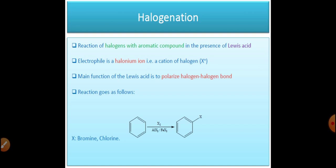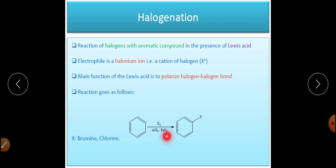The electrophile is generated by a Lewis acid. We generally use the benzene ring reacting with X₂ in the presence of AlX₃ or FeX₃. For example, for bromination, the reaction can be done using benzene and bromine in the presence of FeBr₃. The role of this Lewis acid FeBr₃ is to polarize the halogen bond — the Cl–Cl or Br–Br bond — so that Br⁺ or Cl⁺ can be easily generated and the reaction can proceed.